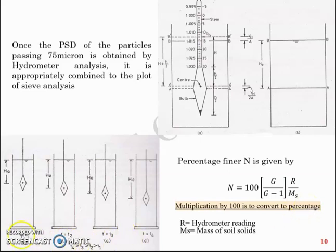This figure shows that as time progresses from t equal to t1 to t2 to t3 to t4, the hydrometer goes deeper and deeper into the suspension and the effective height HE increases.